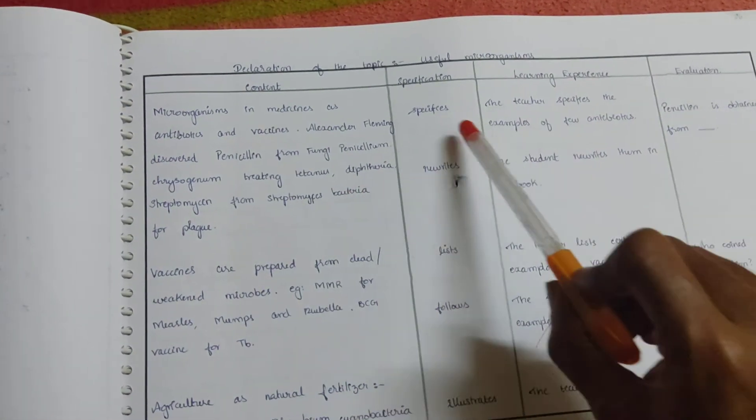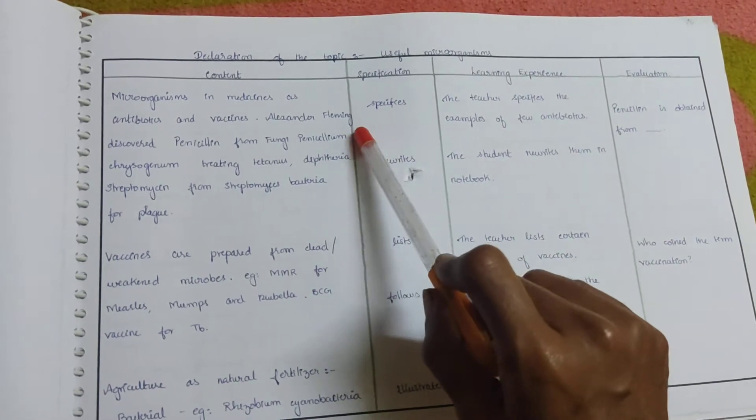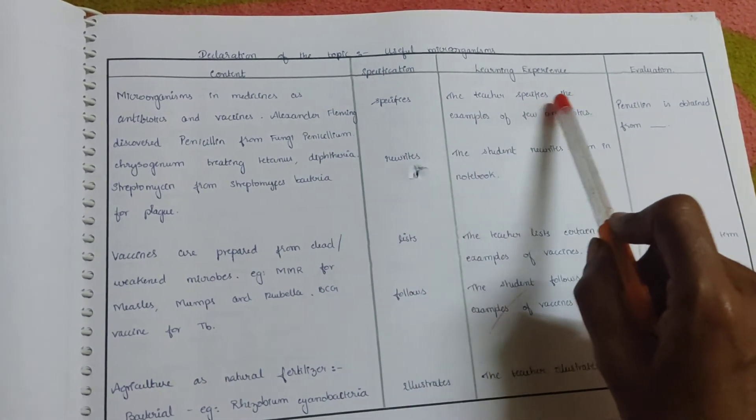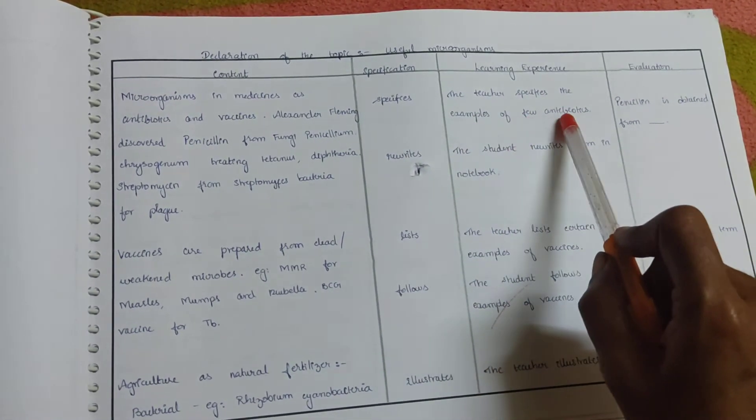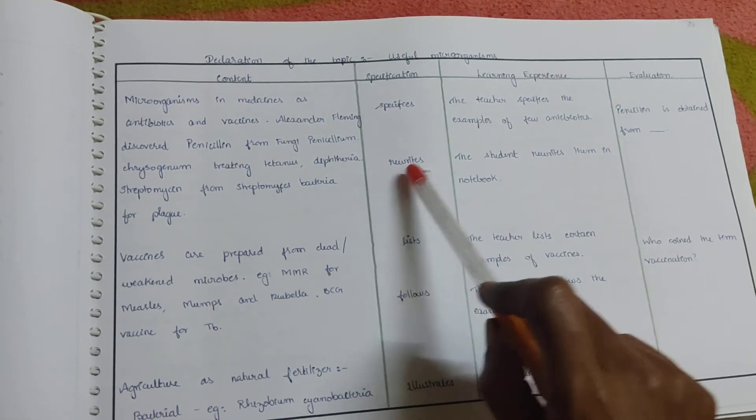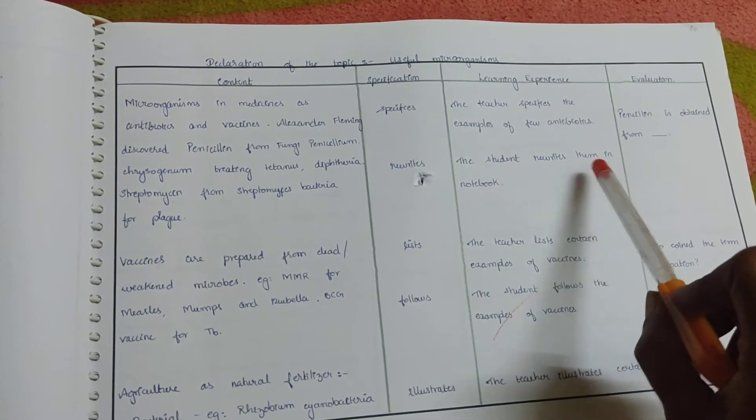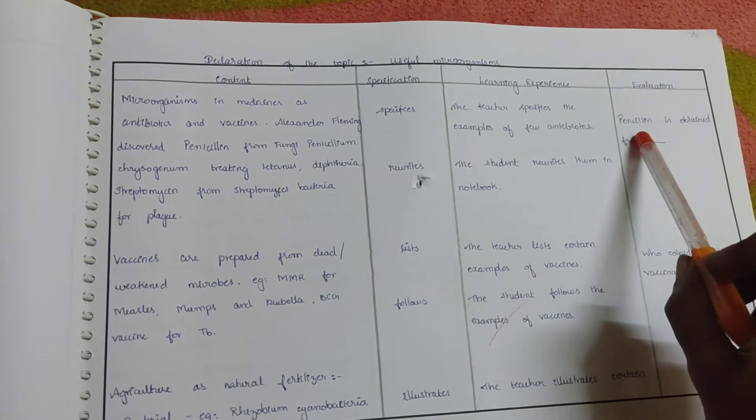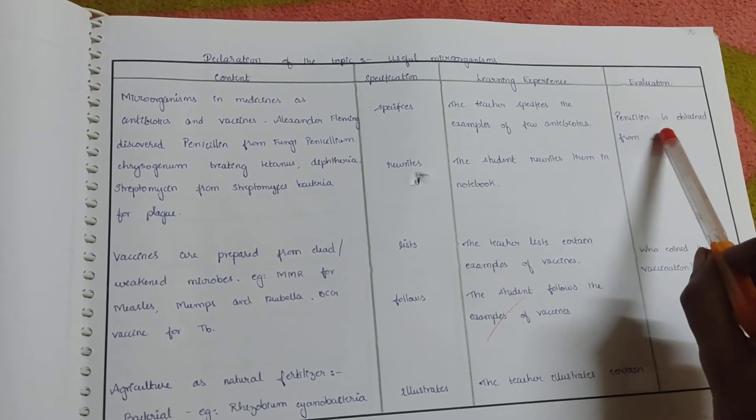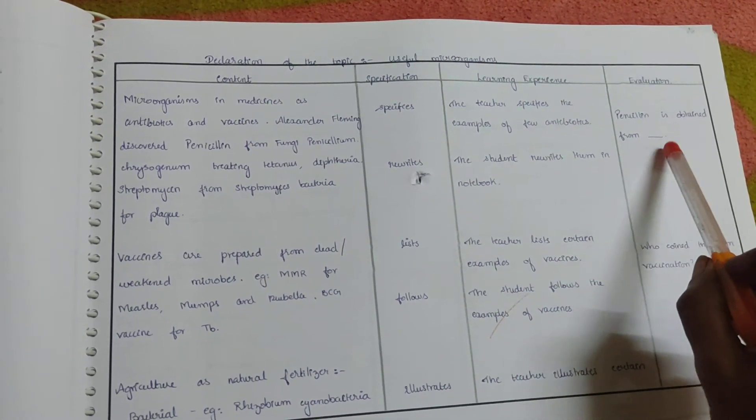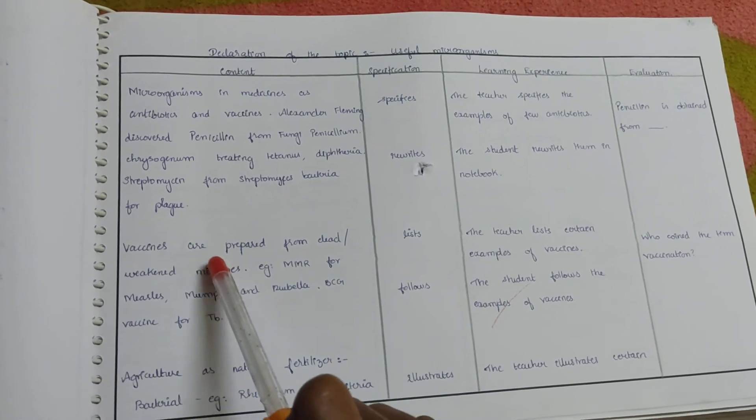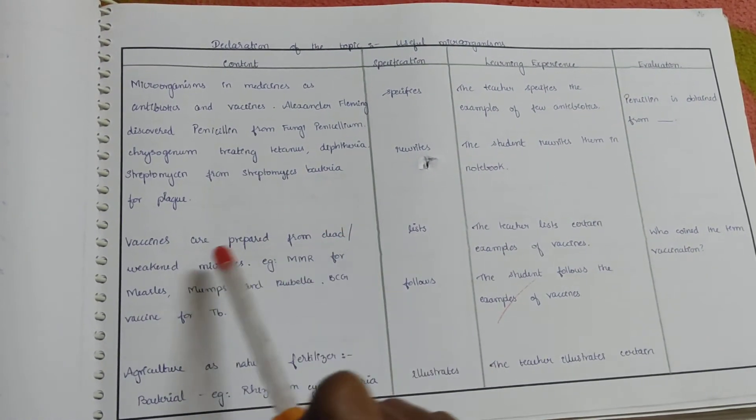Here the teacher specifies the examples of few antibiotics. The student rewrites them in notebook. Evaluation: penicillin is obtained from dash. Next content: vaccines are prepared from dead or weakened microbes.